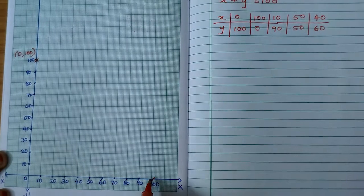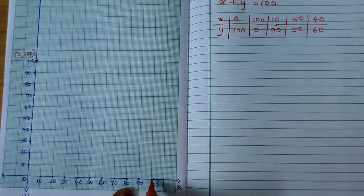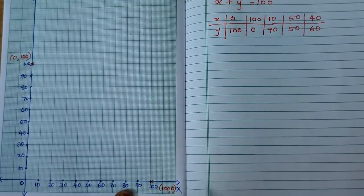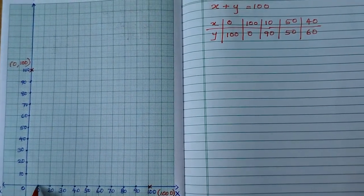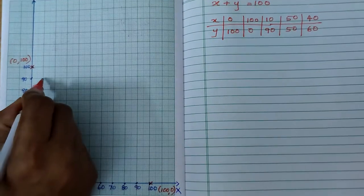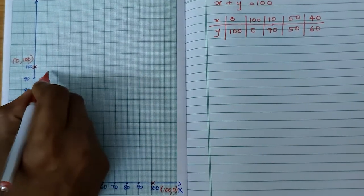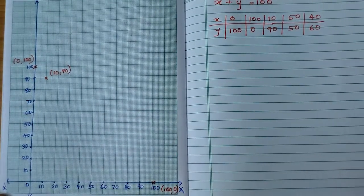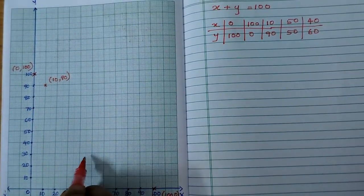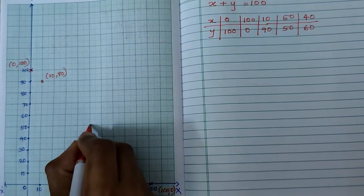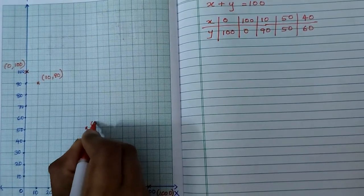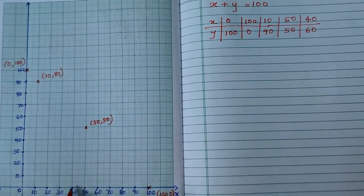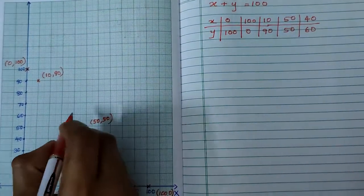Third one, (10, 90). Means on x axis 10 and y axis 90. So this is the point (10, 90). Next, (50, 50). Means on x axis 50 and y axis also 50. So this is the point (50, 50). Next, (40, 60). On x axis 40 and y axis 60.